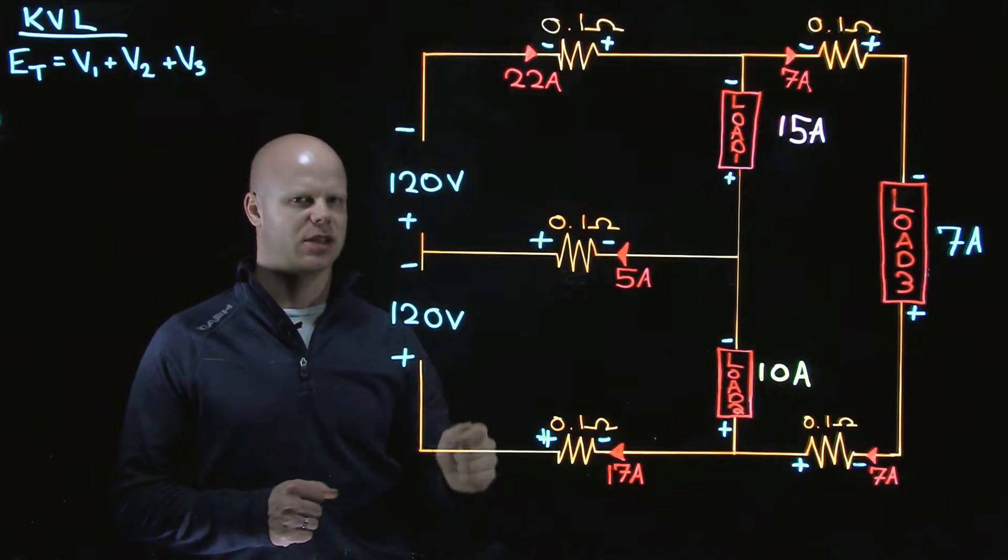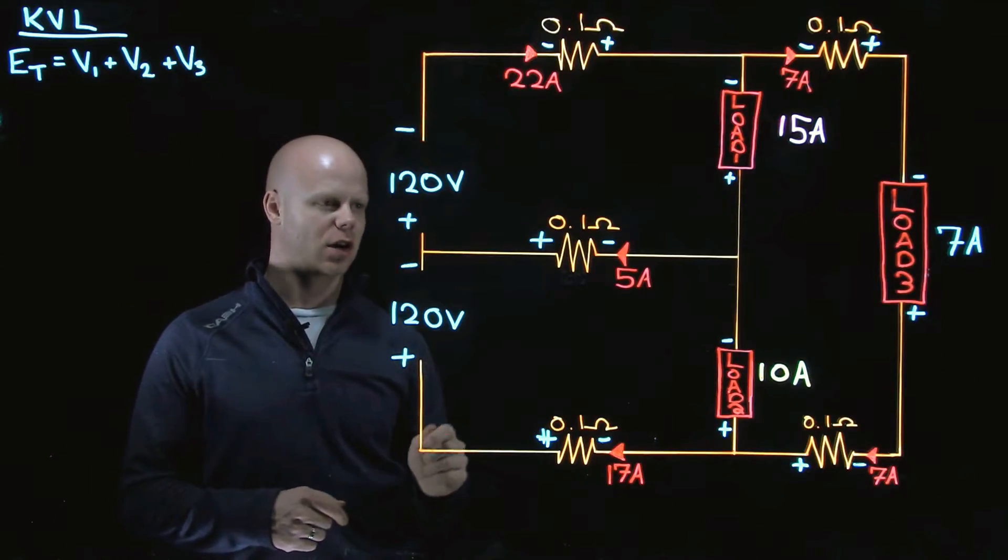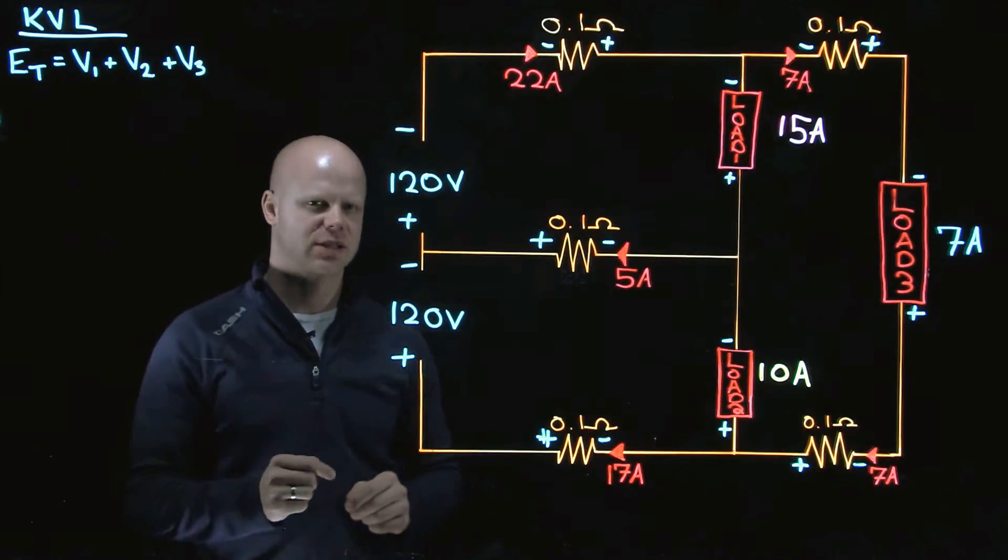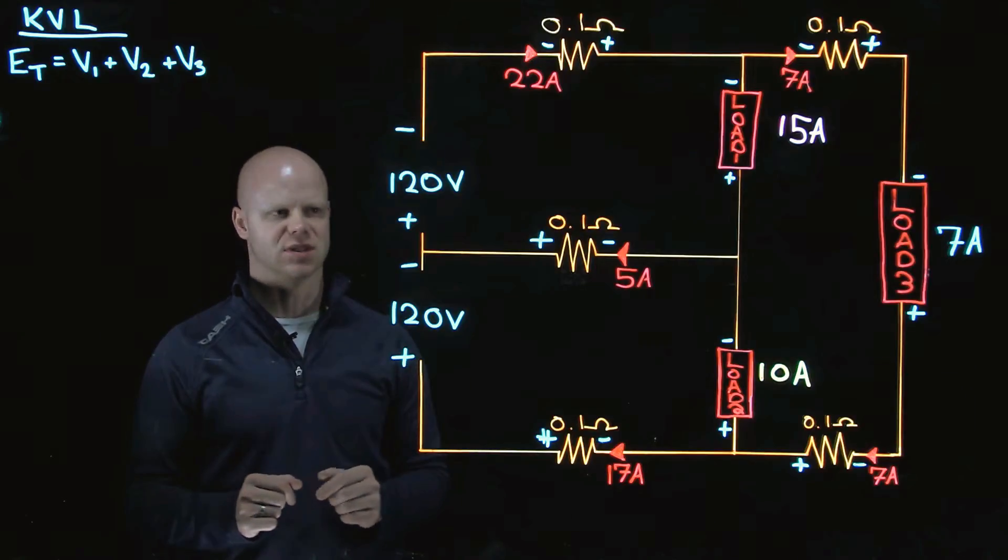We have to make sure that we understand Kirchhoff's voltage law, and he said that the algebraic sum of the voltages in a closed loop has to equal zero.